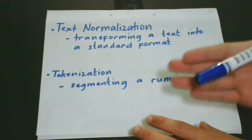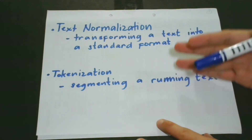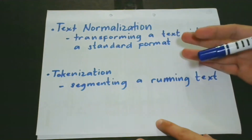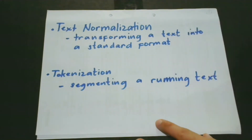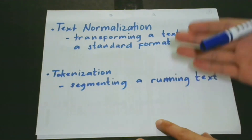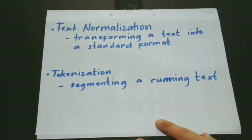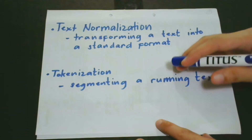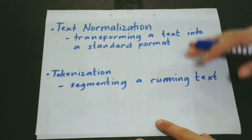Text normalization is a very significant preparatory process in natural language processing. You might ask: what is text normalization, and what makes it very important? Text normalization is a process of transforming a text into a standard format.